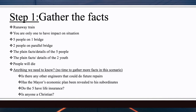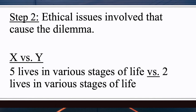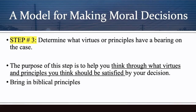Step two — determine the ethical issues involved that cause the dilemma: the X versus Y formula. This is pretty simple. Here's what step two looks like for us: X versus Y — five lives in various stages of life versus two lives in various stages of life. That's one I came up with.